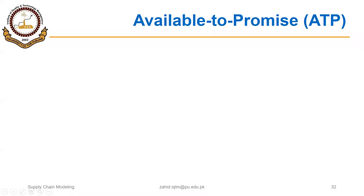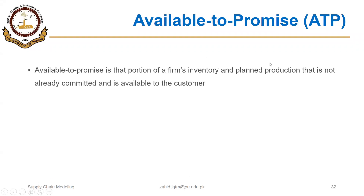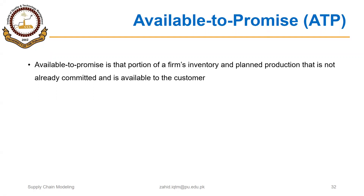In this segment we will discuss another important element of master production scheduling: available to promise. Available to promise is that portion of a firm's inventory and plant production that is not already committed and is available to the customer.